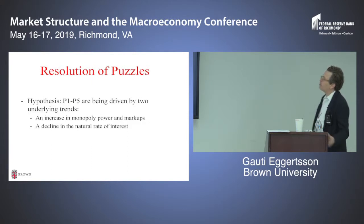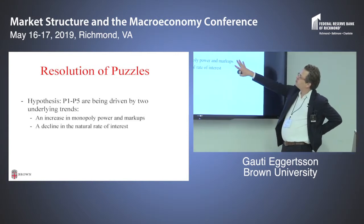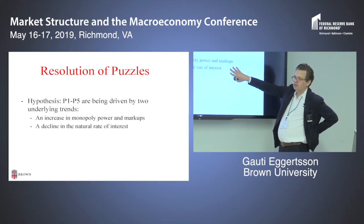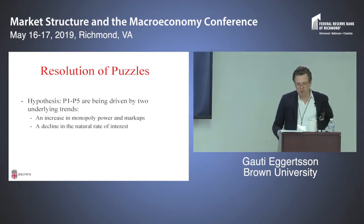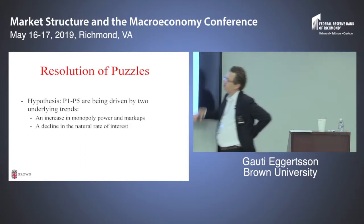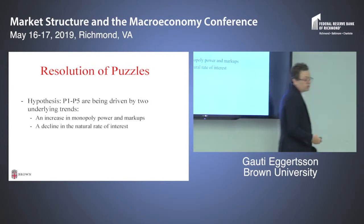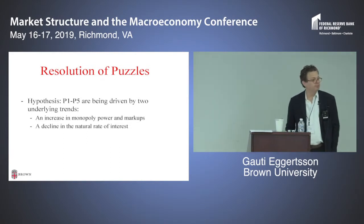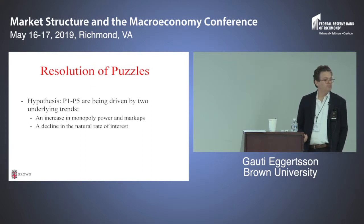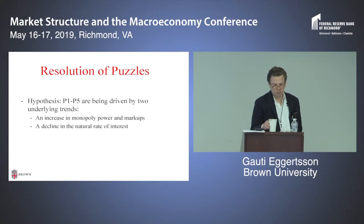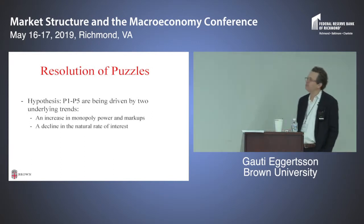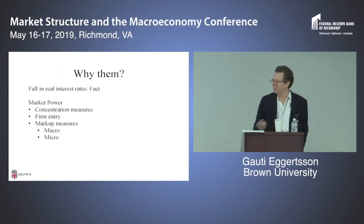The resolution or hypothesis we're going to pursue is that puzzles one through five are going to be driven by two underlying trends: a gradual increase in monopoly power and markups, and a decline in the interest rate — or more precisely, a decline in the cost of capital. The argument is going to be two-fold: first qualitatively, and second we're going to put it in a model and see that it does a reasonably good quantitative job matching these numbers. We see in the data the risk-free rate has gone down. And we don't really need to explain the market power piece here — the whole conference is about that.